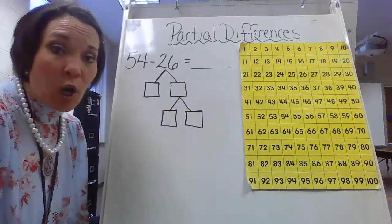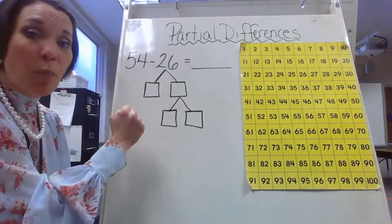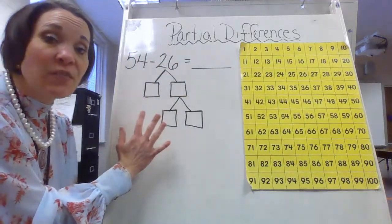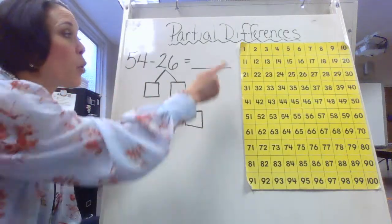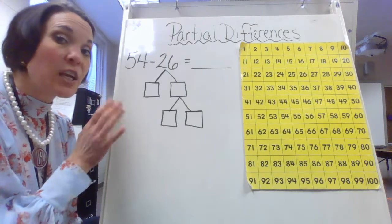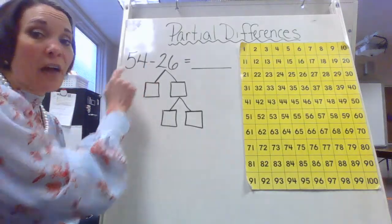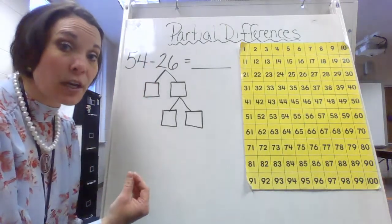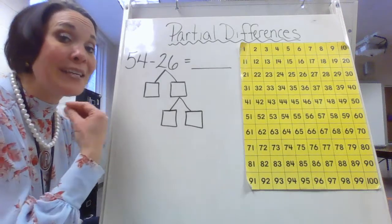If you remember a little bit ago, we did something called partial sums when we were breaking down both of our numbers by their place values and then adding them all up to find our complete sum. However, this is going to change it up a little bit because when we're thinking about differences, we're going to be focusing on the operation of subtraction, because the answer to a subtraction problem is called a difference.